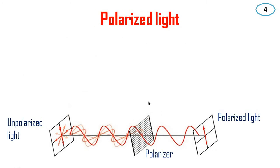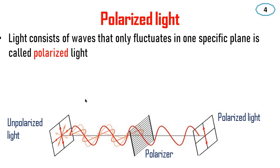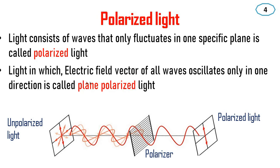The next topic is polarized light. Polarized light means light consisting of waves that only fluctuate in one specific plane. Light in which the electric field vector of all waves oscillates only in one direction is called plane polarized light. There are three categories: cylindrical polarization, plane polarization, and circularly polarized light. We will discuss plane polarized light.